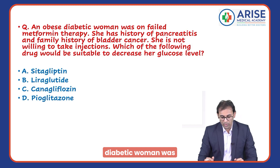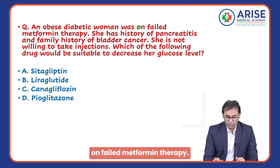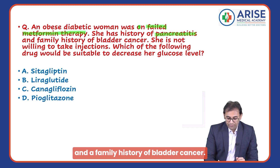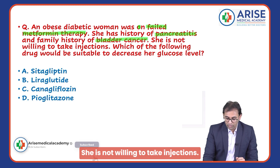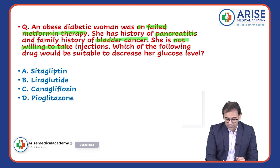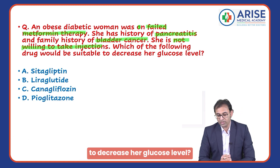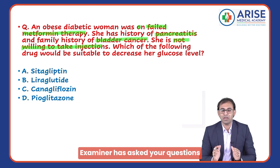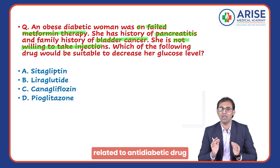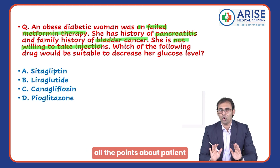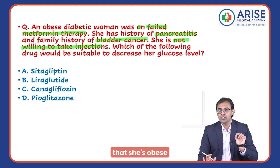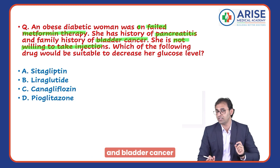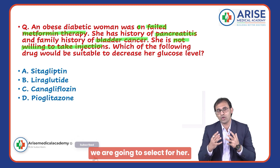An obese diabetic woman was on failed metformin therapy. She has a history of pancreatitis and family history of bladder cancer. She is not willing to take injections. Which of the following drugs would be suitable to decrease her glucose level? The examiner has mentioned all the points: she is obese, doesn't want an injection, and there is already a family history of pancreatitis and bladder cancer.